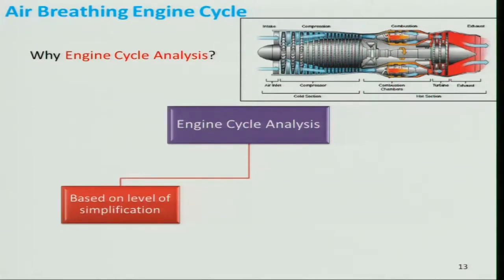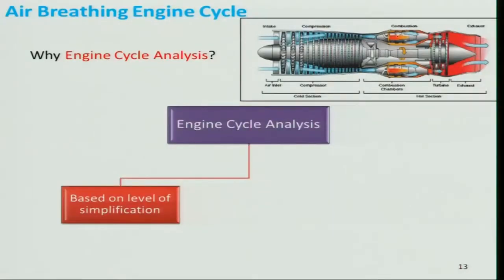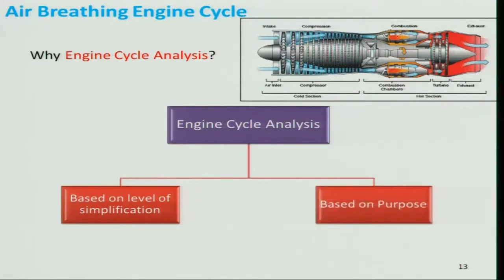So we first carry out an ideal cycle analysis — assuming ideal processes (isentropic compression and expansion, no pressure drop in combustion, air properties unchanged). This is a simplified approach. We then divide the engine cycle analysis based on the level of simplification and the objective of the analysis.